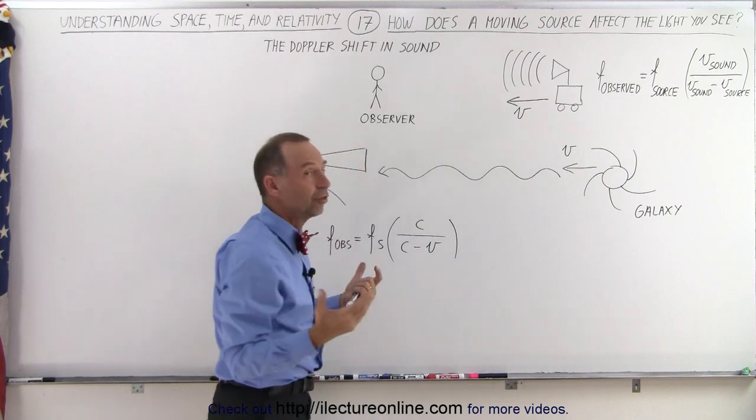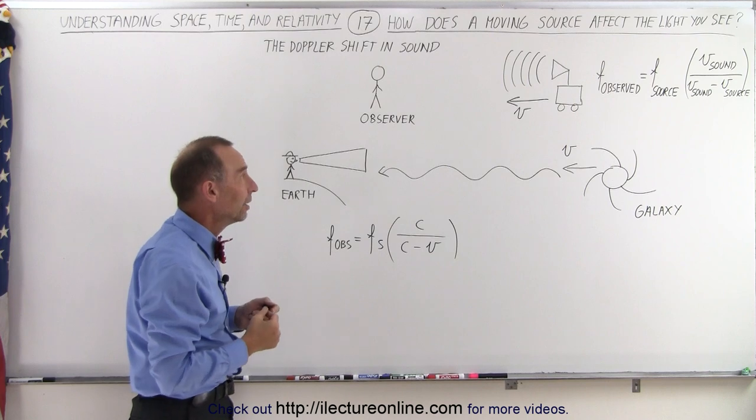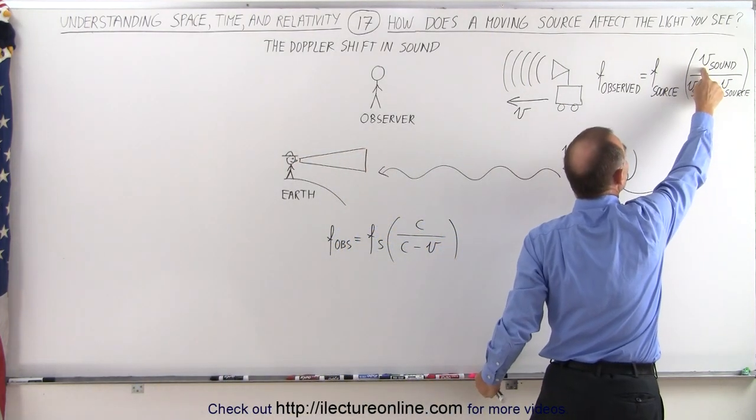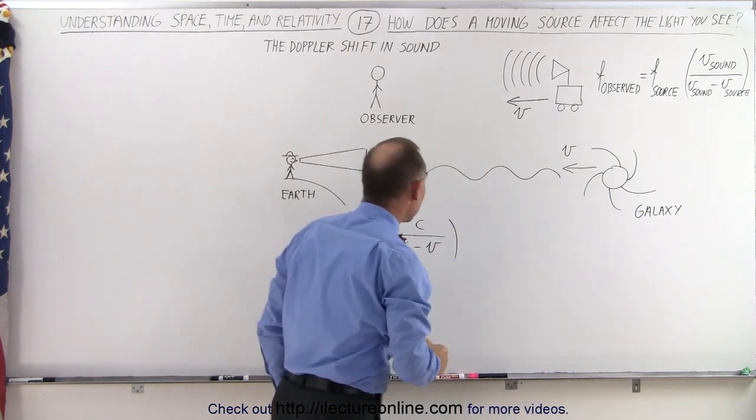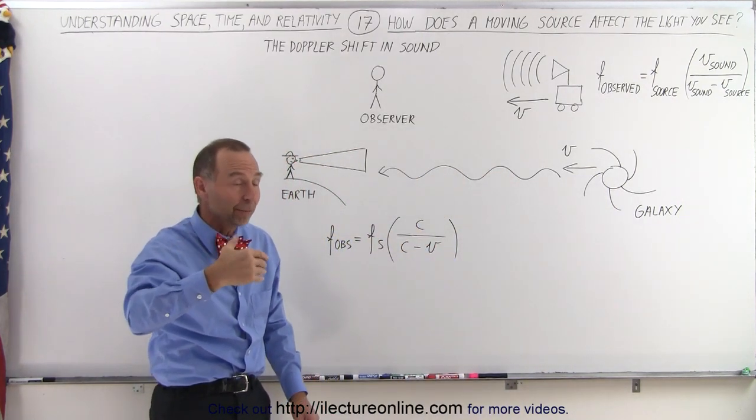The question is, does the frequency of the light change? And the answer is yes, it does in the exact same way. Just like we had the velocity of the wave in the medium here being v of sound, here we have c being the velocity of the light in the medium space.